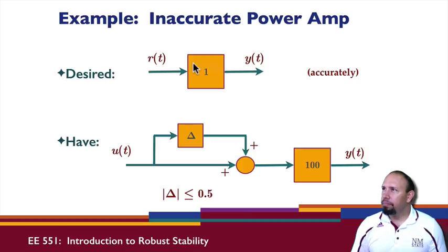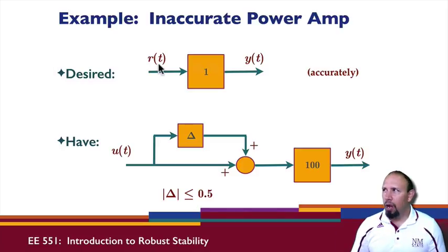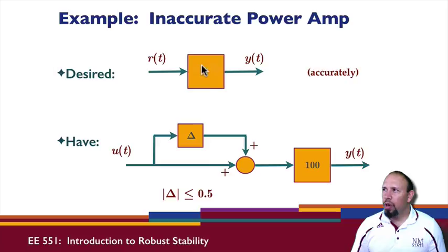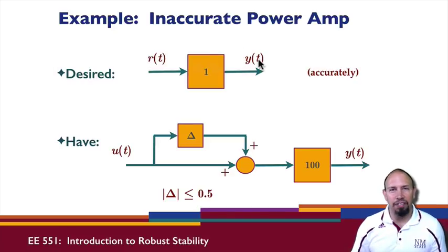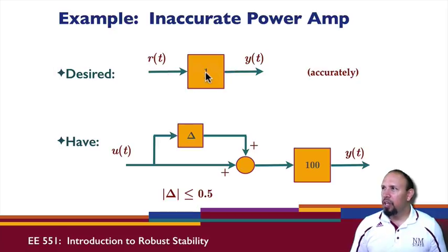Let's look at a quick example with an inaccurate power amplifier. What we desire is that Y follows R — the standard tracking problem. Even though you have a gain of one, there may be a change of units: the input may be in volts while the output could be pressure or the speed of your car. You'd set the input to 65 and want the output — say, car speed — to also be 65.